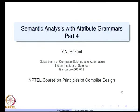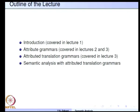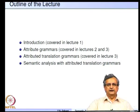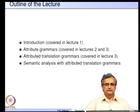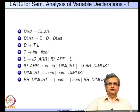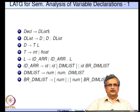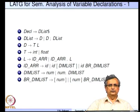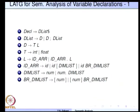Welcome to part 4 of the lecture on Semantic Analysis with Attribute Grammars. We have already looked at a few examples of attribute grammars and attributed translation grammars. Today we will continue with the semantic analysis part. This is the grammar shown last time — a shortened grammar for declarations similar to declarations in the language C.